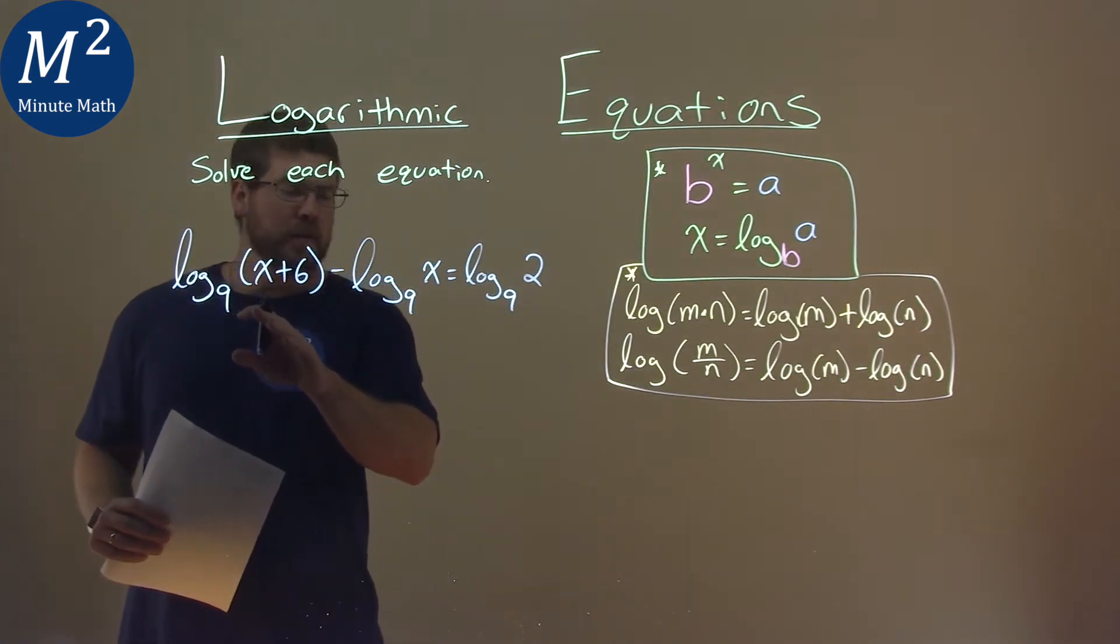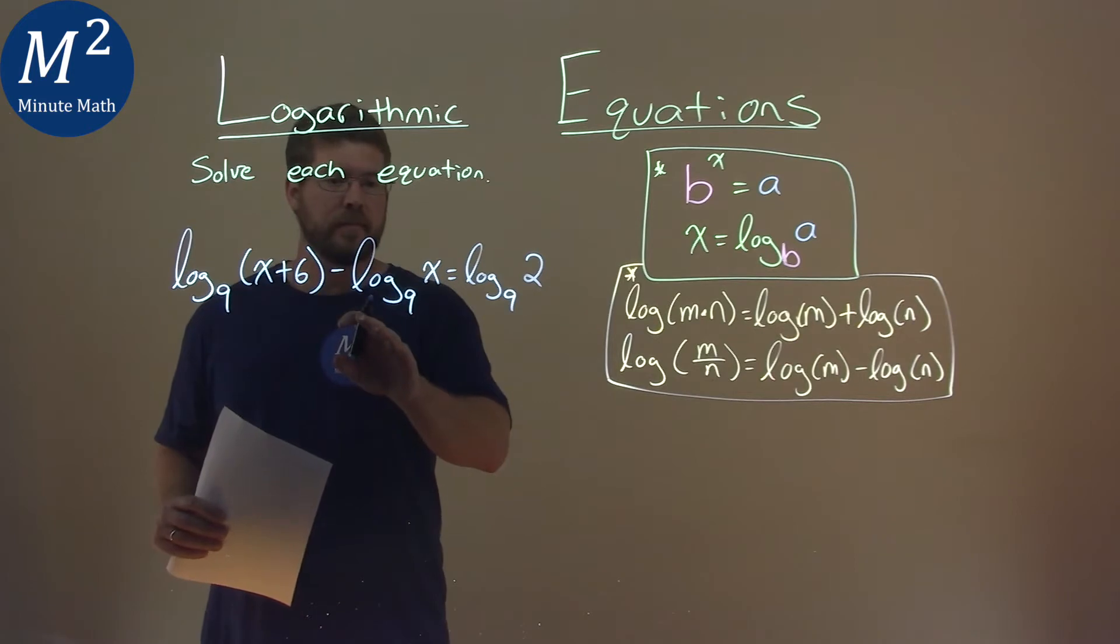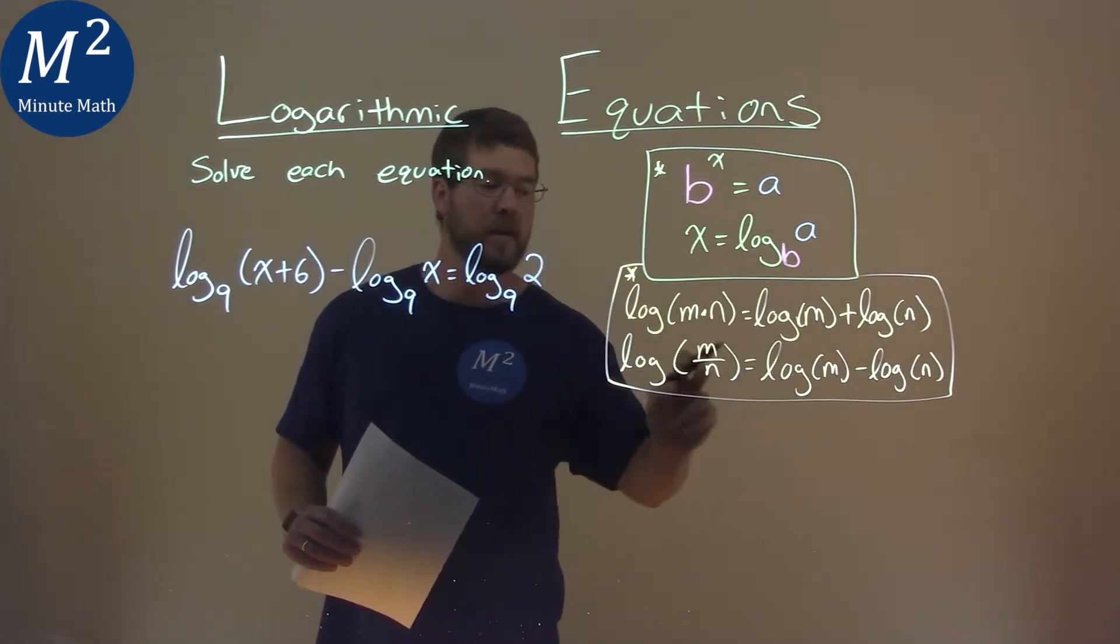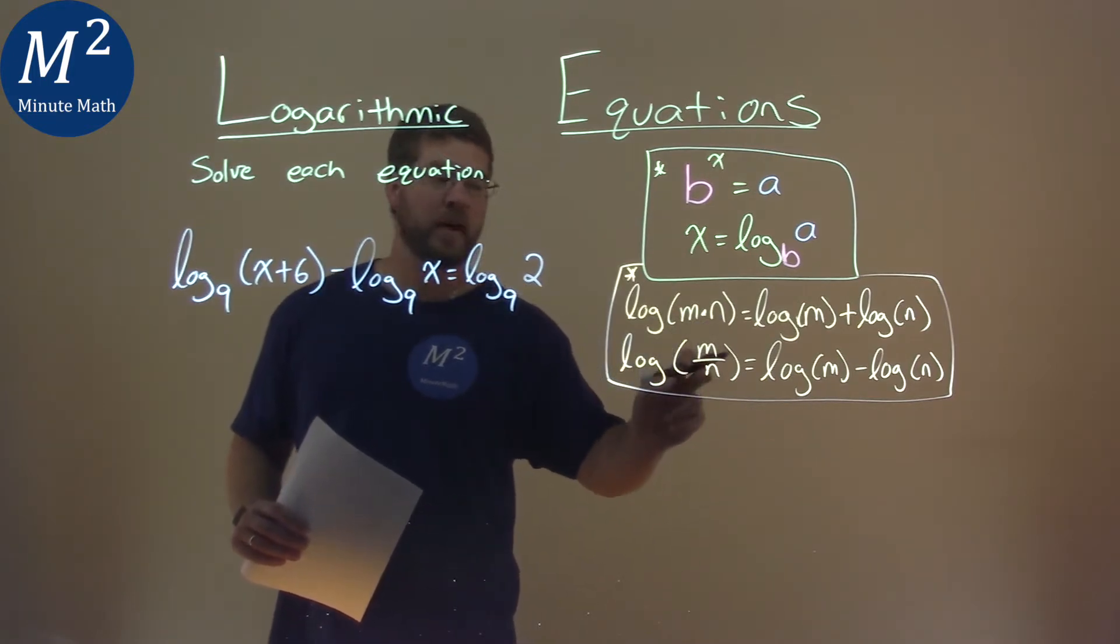Well, our rules tell us we'll get a log with the same base, and we're subtracting them. Log of m minus log of n is the same as log of m divided by n.